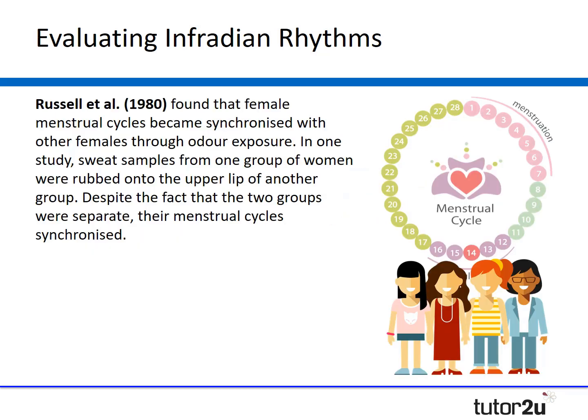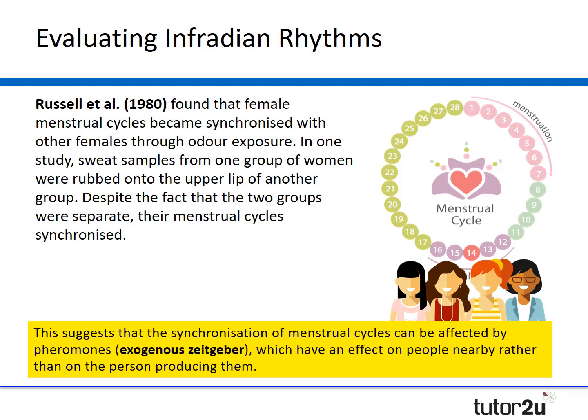Russell also suggested that the menstrual cycle can become synchronised with other females through odour exposure. In one study, sweat samples from one group of women were rubbed onto the upper lip of another group of women. Despite the two groups being separate, their menstrual cycles synchronised. This suggests that synchronisation of the menstrual cycle can be affected by pheromones — an external factor which has an effect on people nearby — again highlighting how infradian rhythms are influenced by external factors.